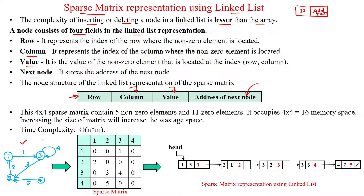The given graph has four vertices connected with weighted edges. A four-by-four sparse matrix has to be created using this graph. It has only five non-zero elements because it has five edges. Since we need a four-by-four matrix of sixteen memory locations, increasing the size of the matrix increases wastage of space.